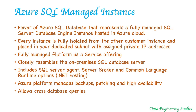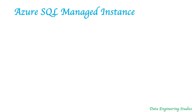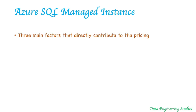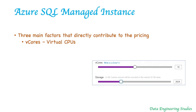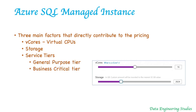Now let's see some of the main factors that contribute to the pricing of Azure SQL Managed Instance. There are three factors. The first one is vCores — virtual CPUs that let you choose the hardware specs. The next factor is storage — you can determine the storage based on your data needs. The next factor is the service tiers, and there are two types: General Purpose and Business Critical.